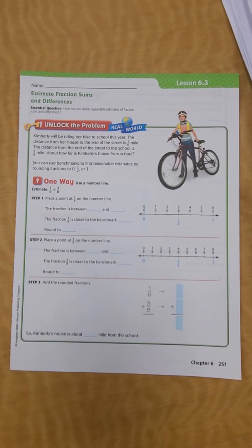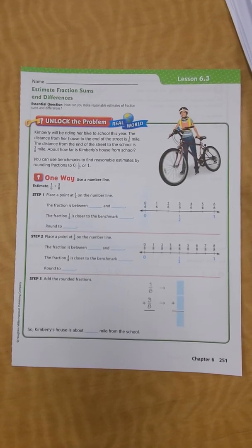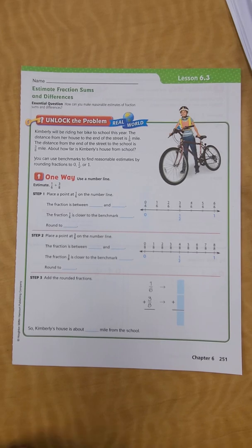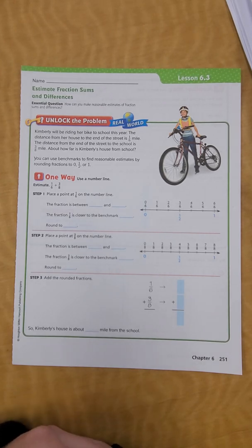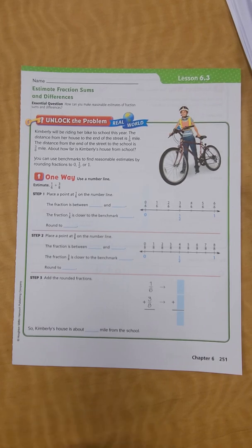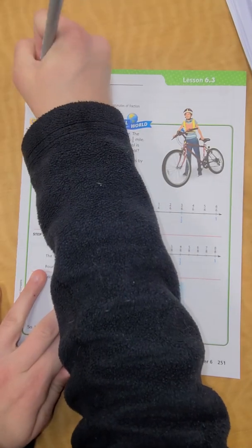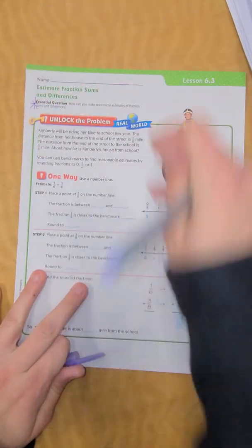Hey guys, here is lesson 6.3: Estimate Fractions Sums and Differences. So yesterday we talked about adding and subtracting fractions with different denominators. Today we're going to estimate to find out if our answer is reasonable. The essential question is: how can you make reasonable estimates of fractions sums and differences? Go ahead and put your star beside your essential question.